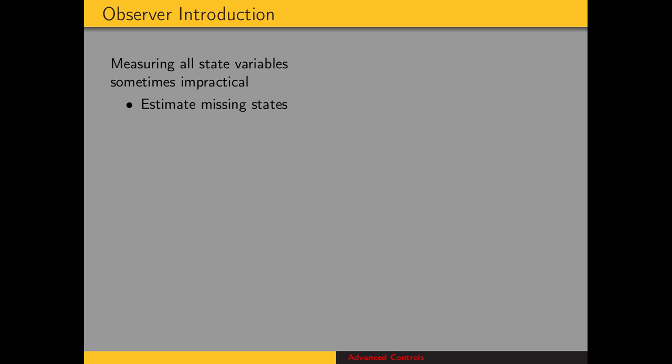The reason we want an observer is that in some instances, some systems, it's not feasible to measure all the state variables, and so we want to be able to estimate the missing state variables.